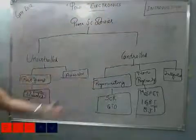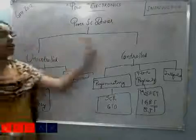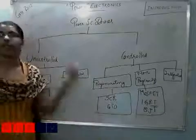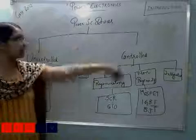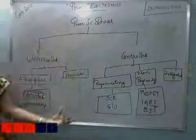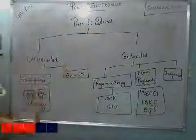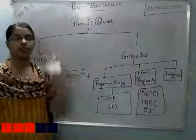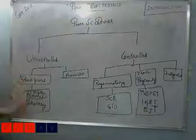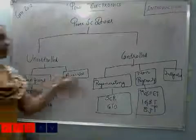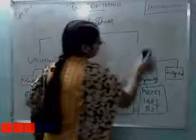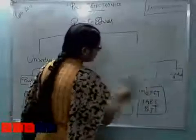If you get a question like 'which power electronic device among the following is a regenerating controlled device,' you can give either SCR or GTO. Or 'which power electronic device is an uncontrolled rectifier device' — that would be a power diode. Such questions can be framed from this hierarchy. We will look at some typical questions from this section and then go into the individual devices.